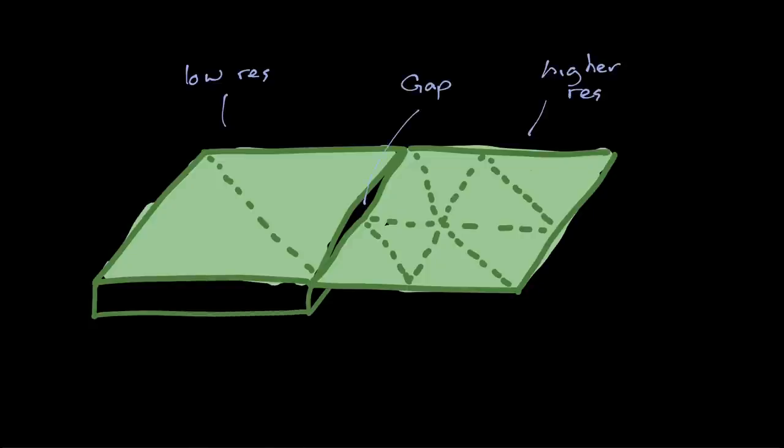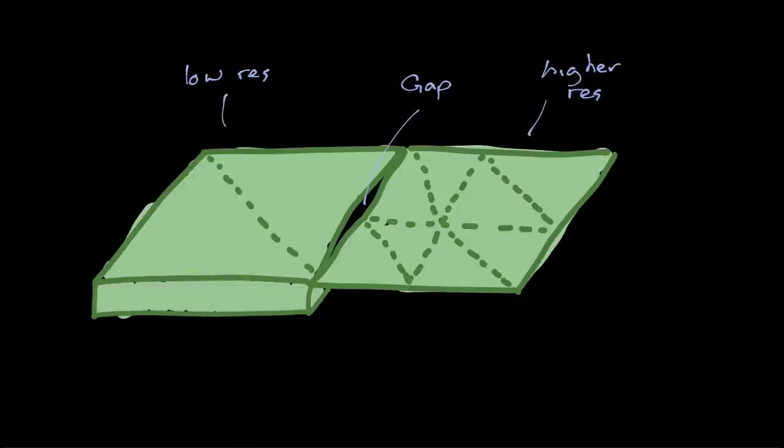An easy way to fix this is to simply fill in these gaps by adding another layer of vertices around the edge of the terrain, effectively creating a skirt around everything. The upside to this approach is that it's super duper easy, really just involves adding an extra layer of vertices around the edge and dropping them down.